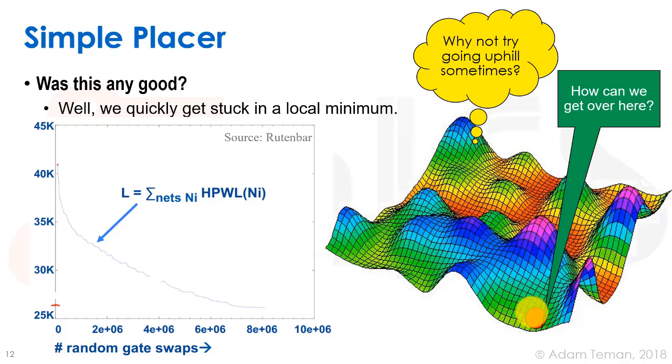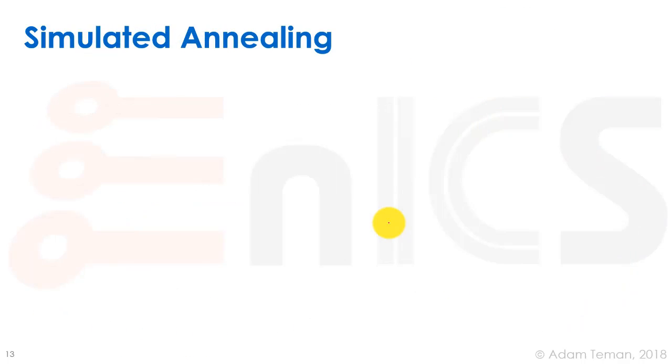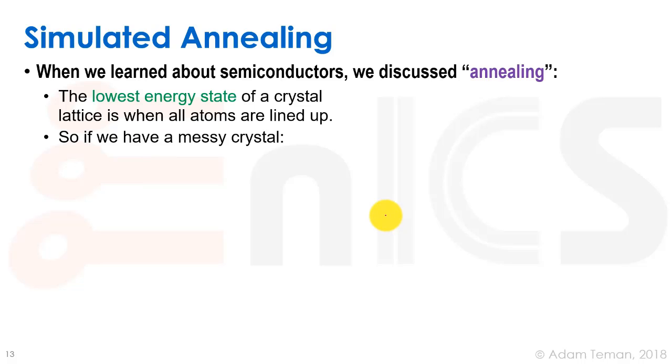That brings us to the idea of simulated annealing. Simulated annealing is an attempt by us to copy some physical traits and put it into a type of algorithm that may help us improve.